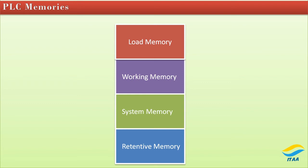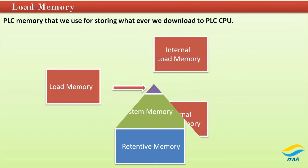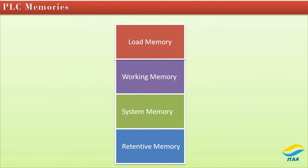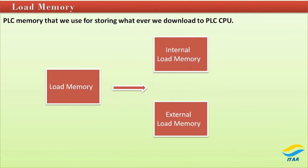The PLC has load memory, working memory, system memory, and retentive memory. In load memory there are two types. Whenever we download a program, the PLC memory used to store that downloaded program to the CPU is called load memory. One type is internal load memory, which is found in older Siemens PLC CPUs. In the case of power loss without battery backup, the information and program stored there would be lost.